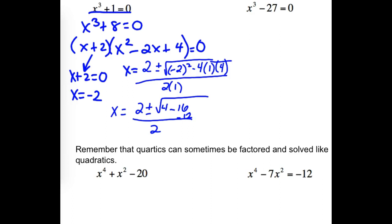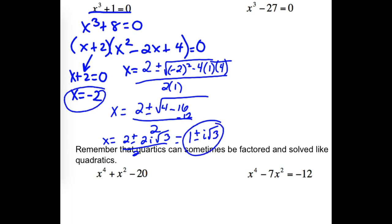This becomes 2 plus or minus 2i√3, all over 2. Can we divide everything by 2? Yes — we end up with 1 plus or minus i√3. Again, it was a cubic, so we should get three answers: one here (x = −2) and two more imaginary ones. Those two are imaginary, so we wouldn't see them on our graph.